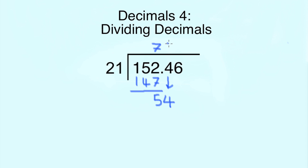This time we're guessing how many times 21 goes into 54, and that is 2 times. We write that above next to the 7 we had previously. 2 times 1 is 2, and 2 times 2 is 4, giving us 42. So 54 minus 42 gives us 12.